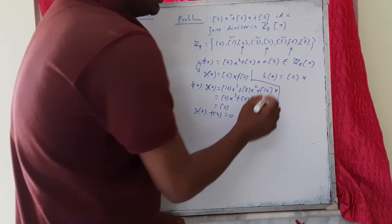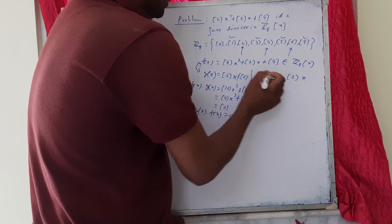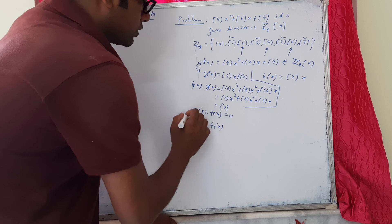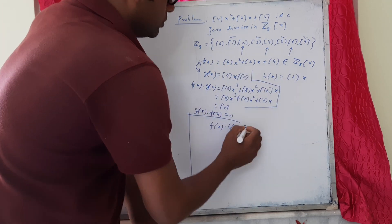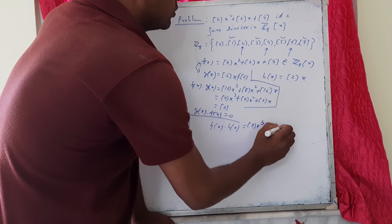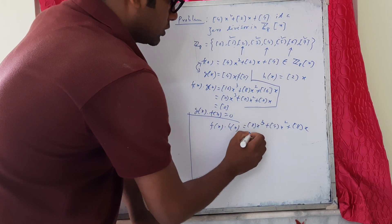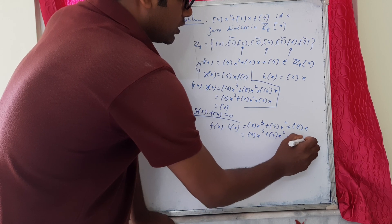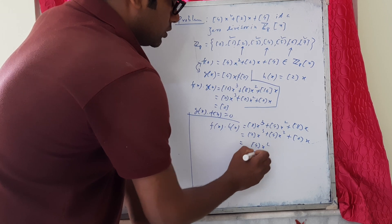If we take h(x) to be the polynomial class 2x and multiply this with f(x), we get f(x)·h(x) = class 8x³ + class 4x² + class 8x. This gives class 0x³, but class 4x² is not class 0, and class 0x. So we get class 4x², which is not equal to class 0.